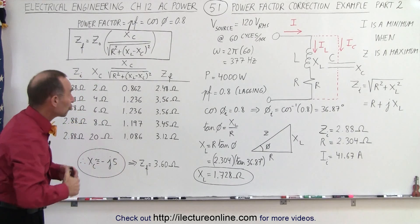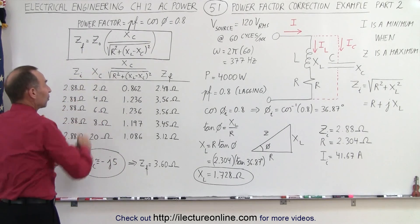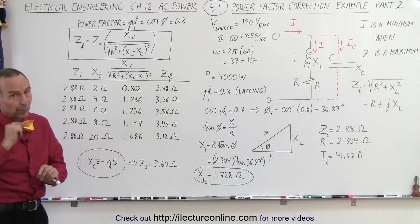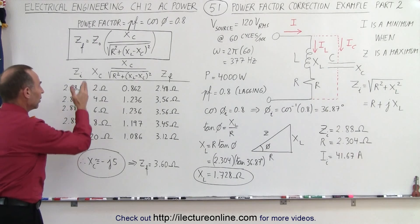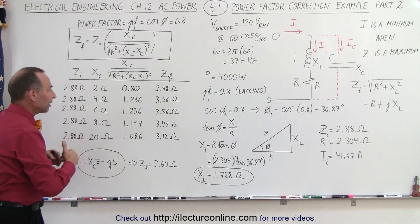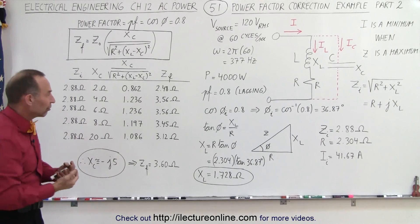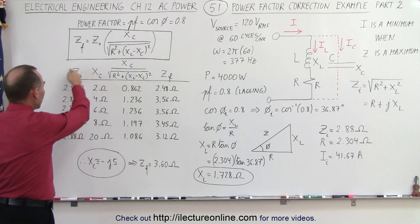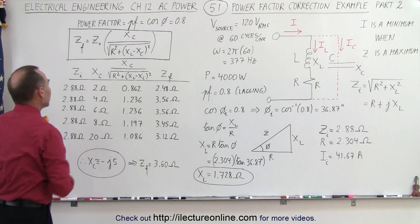So what we're going to do now is try some values for X_C. We will later directly calculate the capacitor required, but right now let's just throw in some values for the capacitive reactance with the initial impedance of 2.88 ohms.